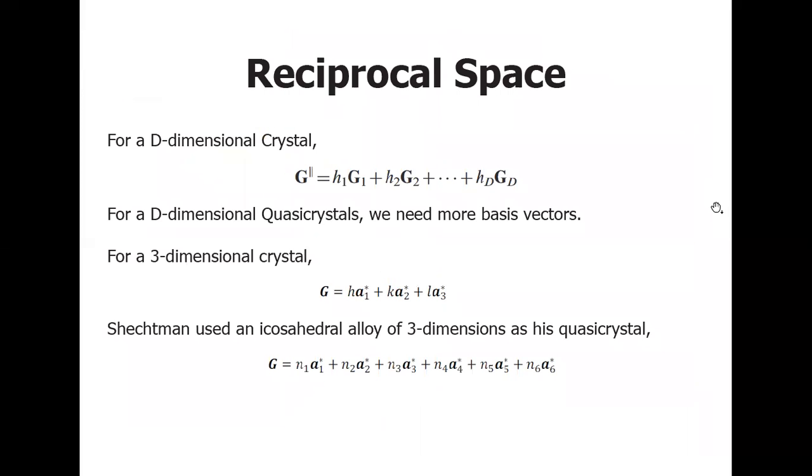Now, we move to understanding the reciprocal space of this quasicrystal. Normally, a reciprocal space of a crystal can be expressed in terms of the linear expression of some basis vectors. That is, for a crystal of dimension D, its reciprocal space can be written as a linear combination of D basis vectors. But what is different for a quasicrystal of the same dimension is it's not going to be expressed through just D basis vectors. It requires that the reciprocal space of the D-dimensional quasicrystals be composed as a linear combination of more than D basis vectors.